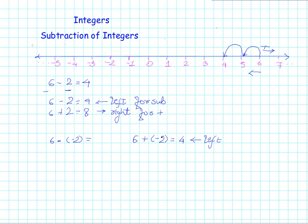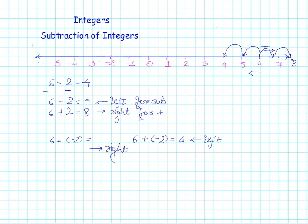Here you can see that whatever direction we go for addition, the direction for subtraction is always the opposite. For addition of negative 2, we went to the left hand side. So to compute 6 minus minus 2 — that means to subtract negative 2 from 6 — I go in the opposite direction, which is the right hand side. Going 2 steps to the right: step 1 is 7, step 2 is 8. So I get 8.